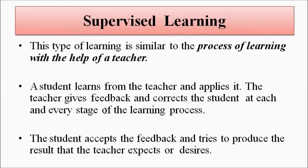A teacher teaches the student various new concepts related to different subjects. The student then carries out tasks given by the teacher. The teacher provides feedback, suggestions, and corrections — indicating where the student made mistakes and how to rectify them. The student gets feedback at each and every stage of the learning process, accepts it, and tries to rectify mistakes to give the result the teacher expects. Supervised learning in a neural network is similar in nature to this.